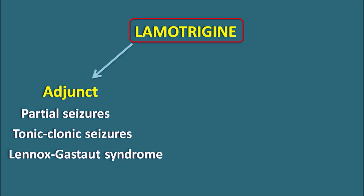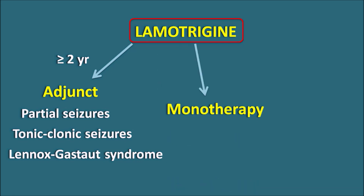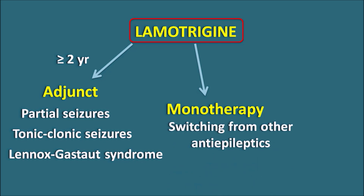In all these conditions lamotrigine can be used, but this drug should be given in patients with age greater than or equal to 2 years — children less than 2 years should not use lamotrigine. This drug can also be used for monotherapy, particularly during conversion, switching from other anti-epileptics. For example, if a patient is prescribed phenytoin, carbamazepine, or valproate and these drugs produce intolerable side effects or are less effective, lamotrigine can be given as monotherapy. However, the safety of lamotrigine is not established in children, so for monotherapy it is used in patients aged greater than 16 years.